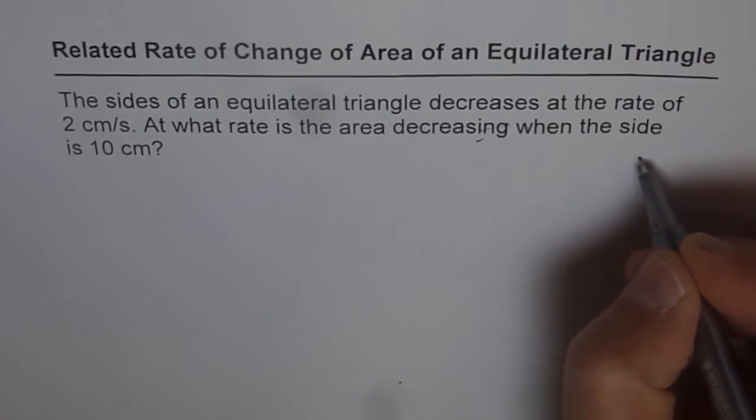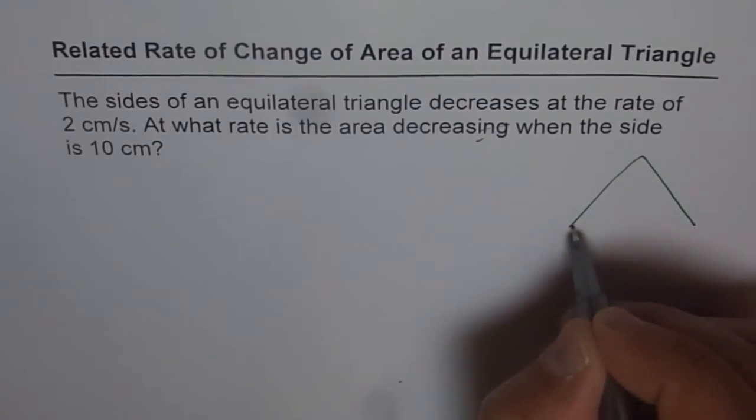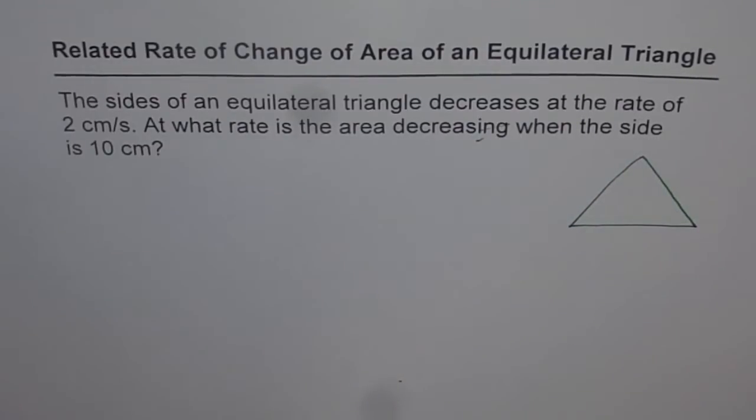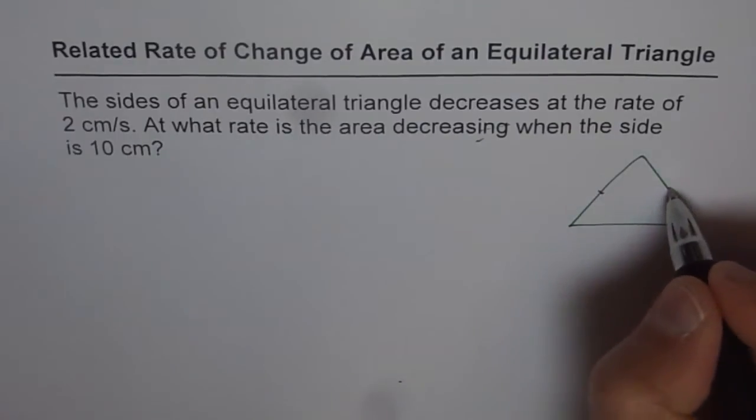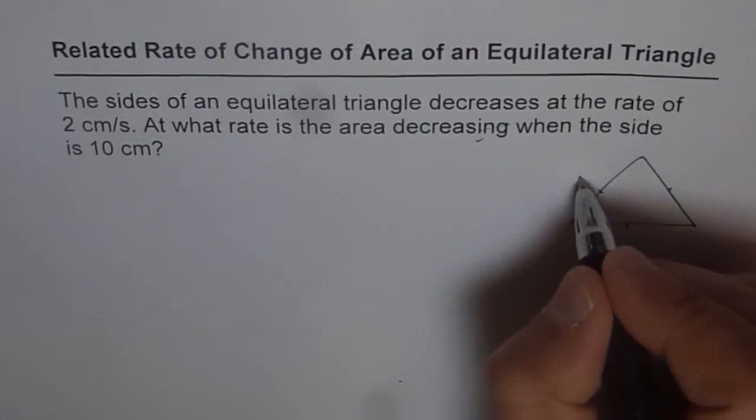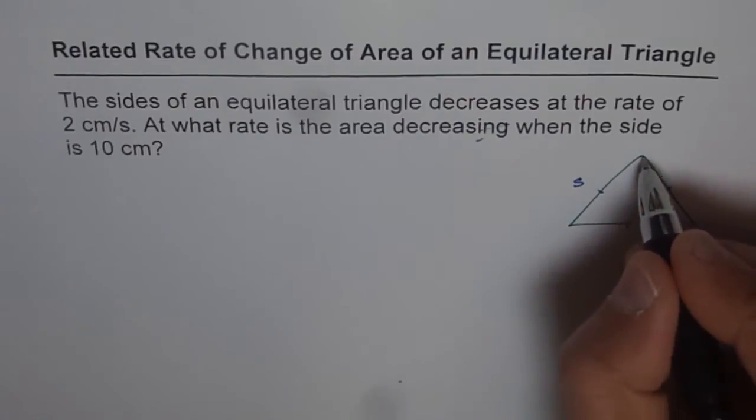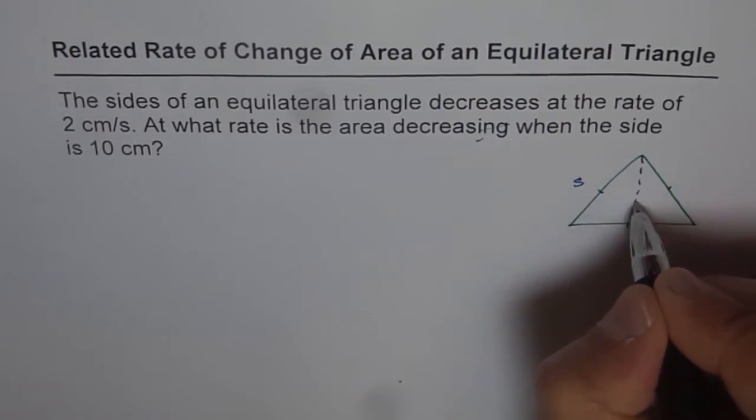So we have a triangle here, let me draw one triangle. And that is an equilateral triangle. Equilateral triangle means all sides are equal, and let us assume the sides to be S. Now if S is the side of an equilateral triangle, then what is going to be the height?